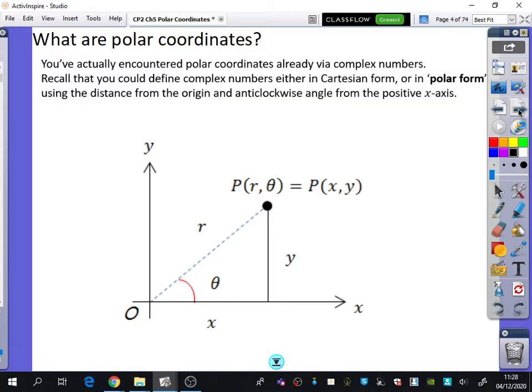Recall that you could define a complex number either in its Cartesian form or in its polar form, and its polar form was just using the distance from the origin and the anticlockwise angle from the positive x-axis. Remember with complex numbers, you might say something like the complex number 3e to the i pi, where you know that the length of it is 3 and the angle is pi, and you would know where to plot that on an Argan diagram. So technically, you already know what polar coordinates are.